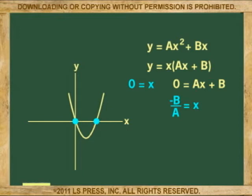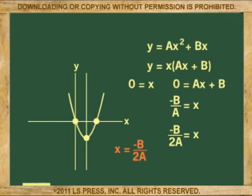But, we want the value at the center of this line. So, we divide negative b over a by 2 and the standard equation to find the x value of the vertex of a parabola is x equals negative b over 2a.